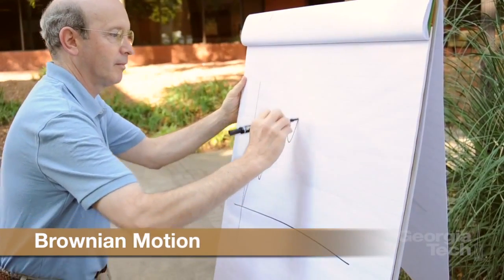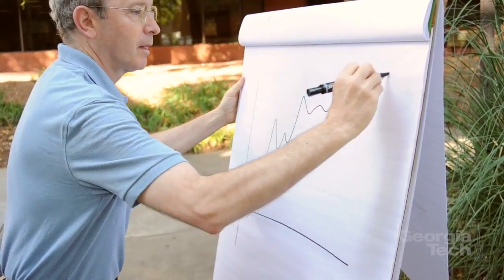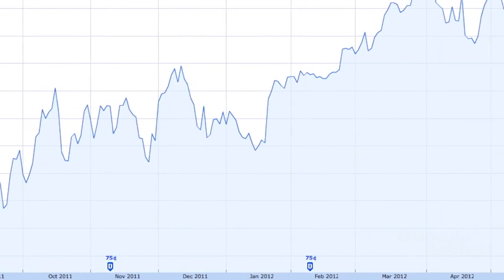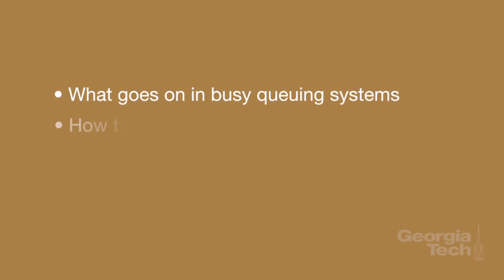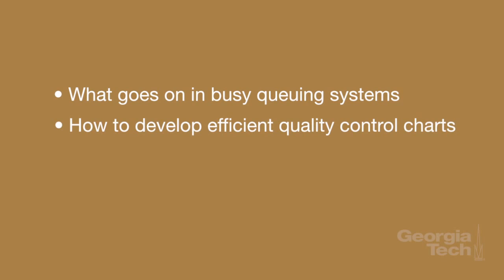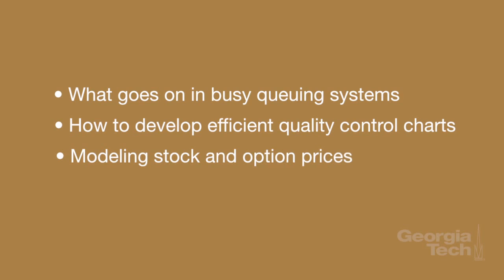Have you ever seen anything like this example of Brownian Motion before? Sure — take a look at IBM's stock price over the last year. In fact, many financial engineers use Brownian Motion to model stocks, options, and other financial instruments. Brownian Motion is so important and mathematically deep that at least two scientists have won Nobel Prizes explaining it and using it in all sorts of applications. In ISyE, researchers use Brownian Motion to study busy queuing systems, develop efficient quality control charts, and model stock and option prices.